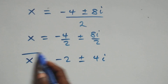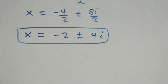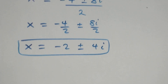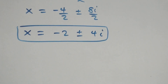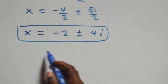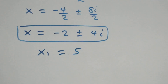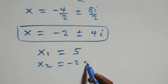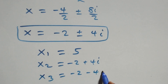We have two complex solutions, so altogether we have three solutions: one real and two complex. x₁ equals to 5 (real solution), x₂ equals to minus 2 plus 4i, and x₃ equals to minus 2 minus 4i.